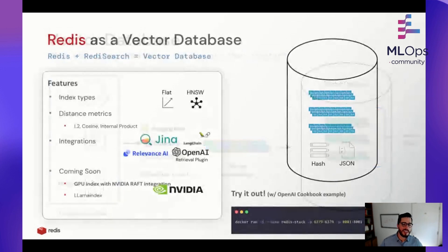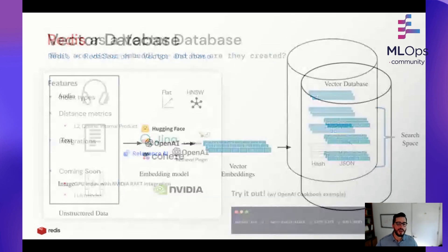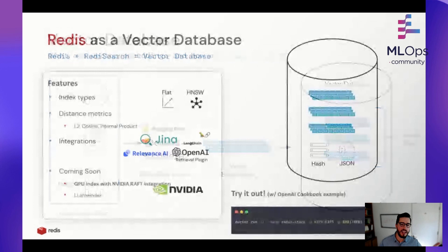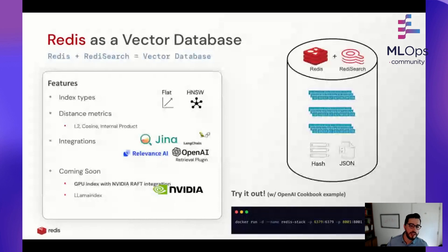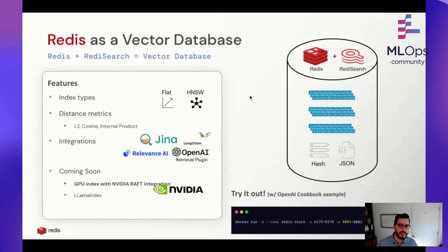So why is Redis in this conversation? With Redis Search, Redis is a vector database. When you have both Redis and Redis Search, you have the ability to do secondary indexing on hash and JSON documents stored inside Redis. We have two index types: flat and hierarchical navigable small worlds, and a bunch of integrations coming out.